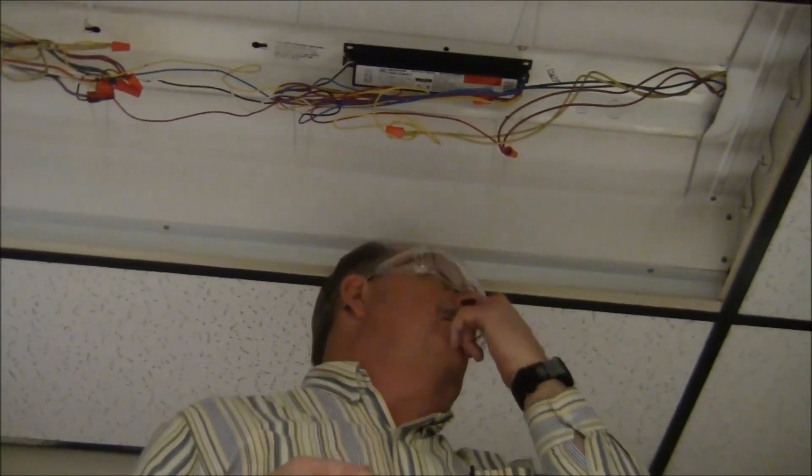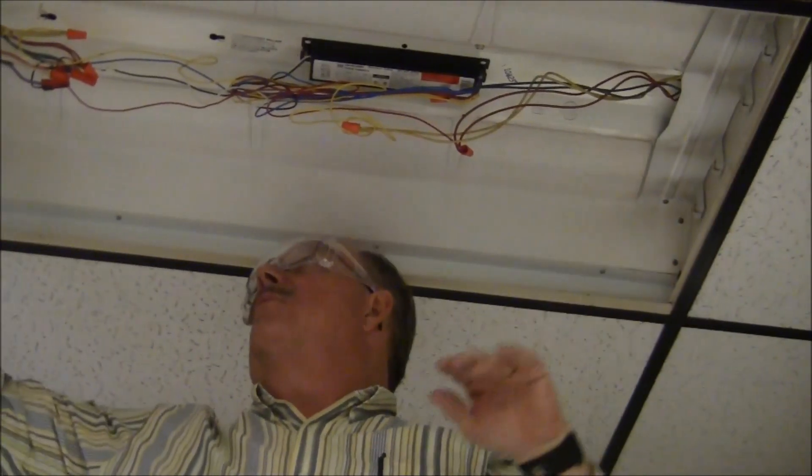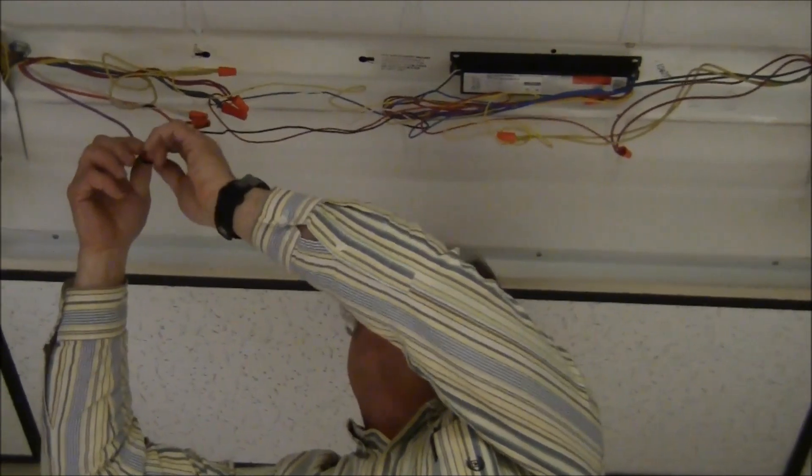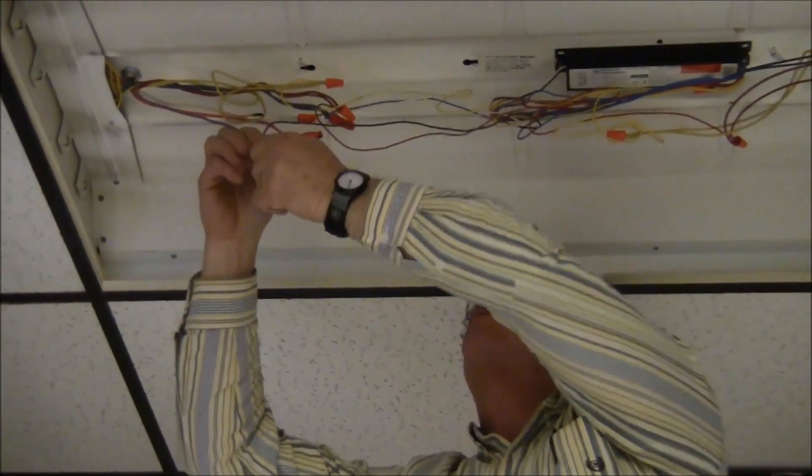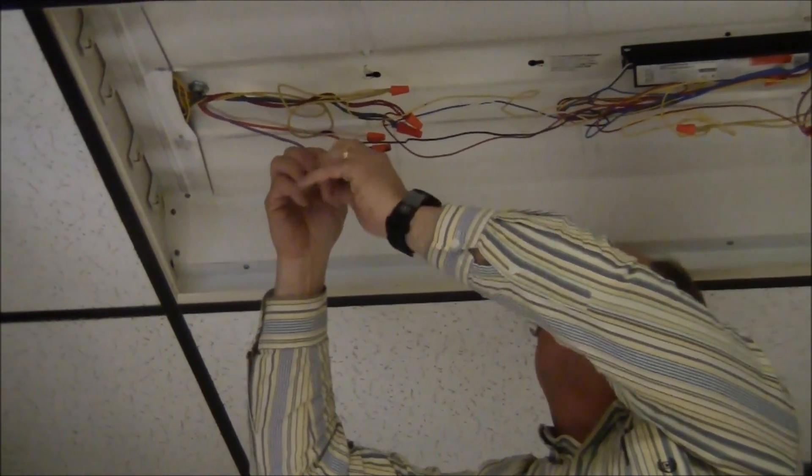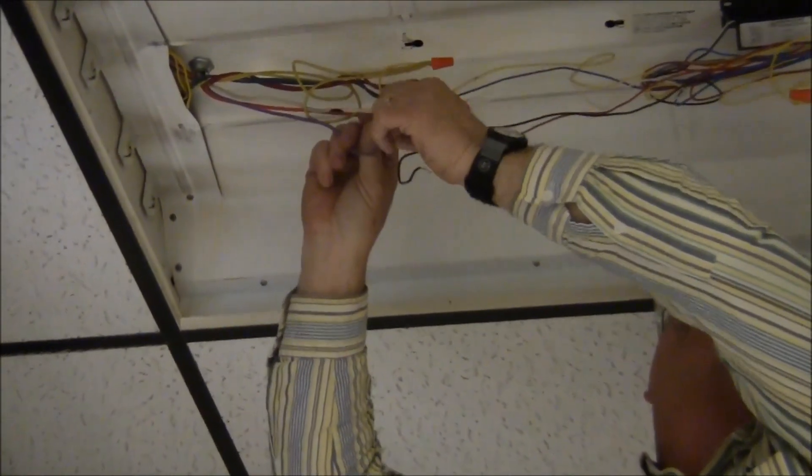The LED bulb is going to require us to energize one set of pins with the line voltage. In this particular case, we have 277 volts coming into the fixture, so the first thing I want to do is disconnect the main power from the ballast and get the ballast out of the system.